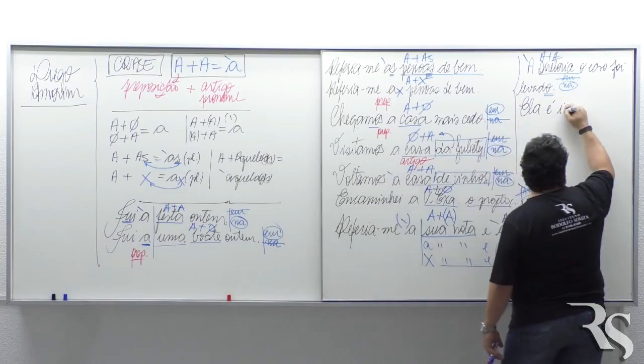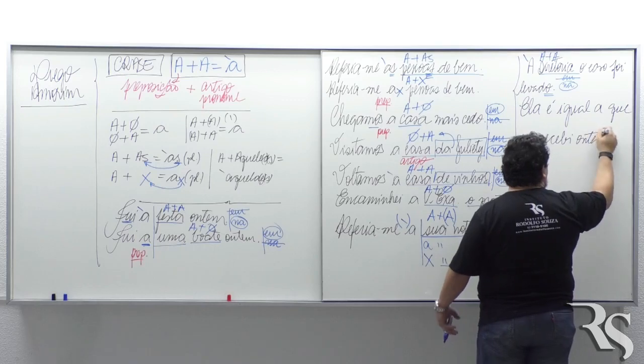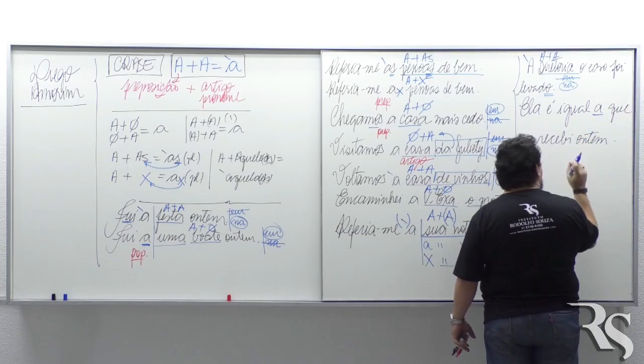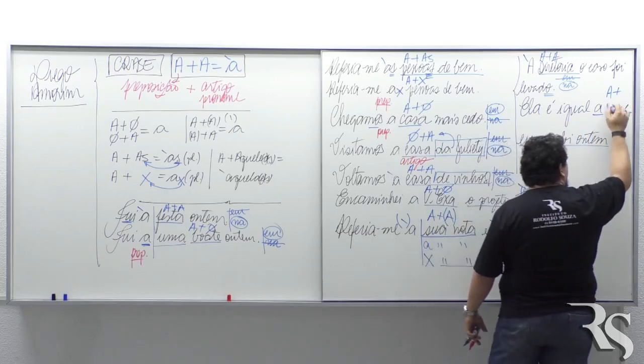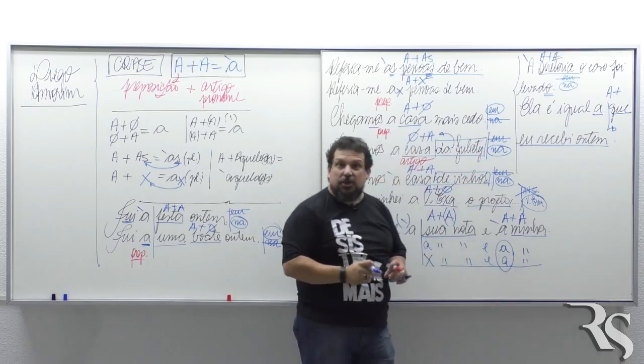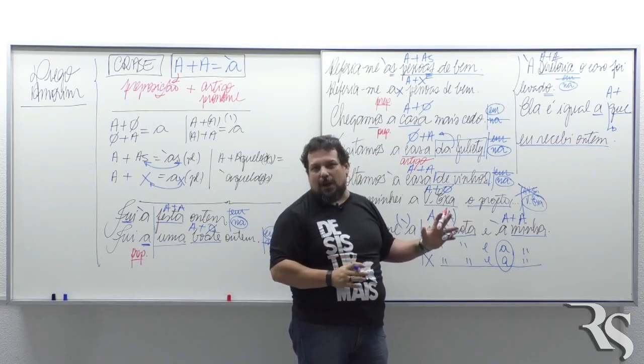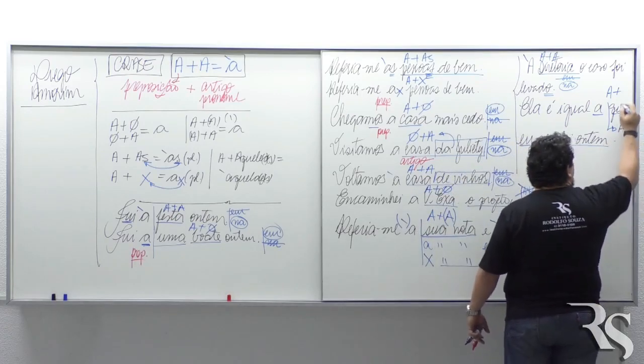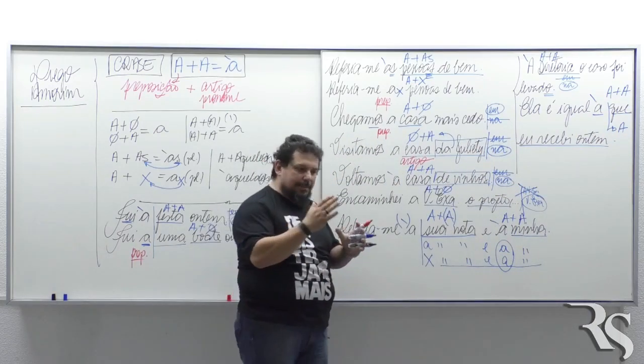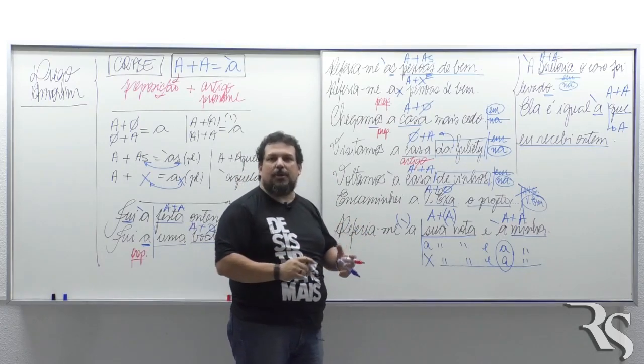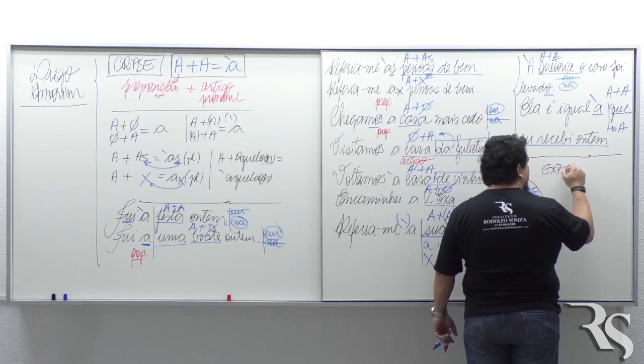Ela é igual a que eu recebi ontem. Um A está aqui. Não tem palavra feminina na frente. Mas crase é dada por A mais A. Quem é igual, é igual a. Eu venho daqui para cá e faço a frase. A frase que eu recebi ontem é legal ou a frase é a que eu recebi ontem é legal? Qual das duas você refere? Não tem A aqui? Tem A, tem dois, tem crase. Sempre que você for testar um A, testa o primeiro, testa o segundo. Se houver dois A's, você tem crase.